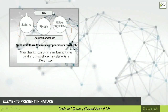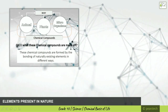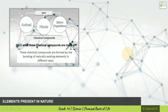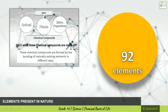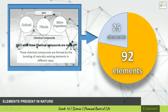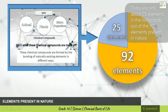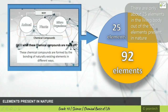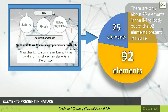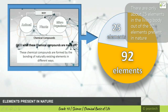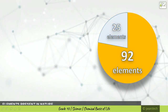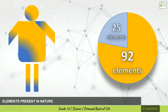Now, elements present in nature: there are 92 elements available in the total environment. Out of that, only 25 elements are present in the human body — in the living body. So out of 92 elements present in nature, less than 25 percent are found in living bodies.